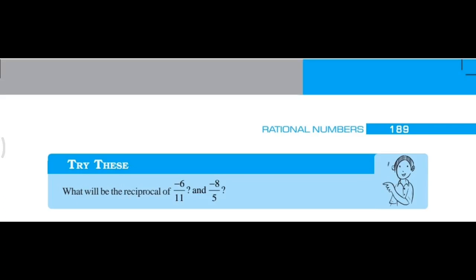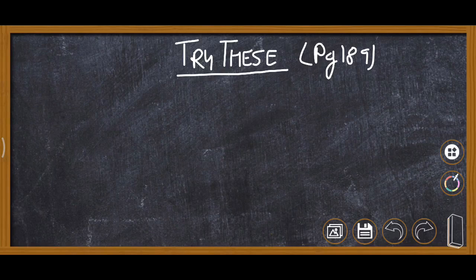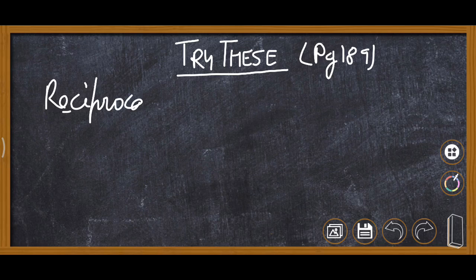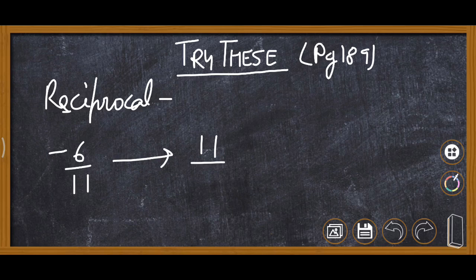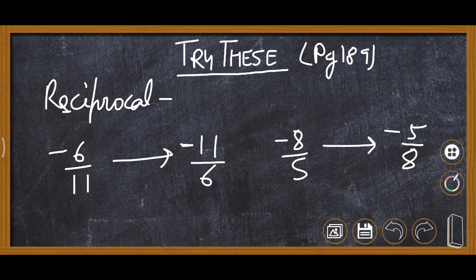On page 189, the Try These asks for the reciprocal of rational numbers. Reciprocal means the denominator becomes the numerator and the numerator becomes the denominator. So the reciprocal of -6/11 is 11/(-6), with the minus on the numerator. The reciprocal of -8/5 is -5/8.